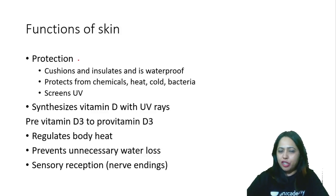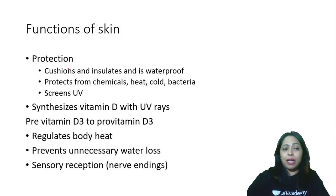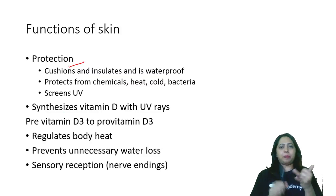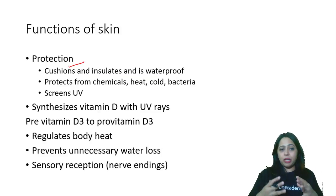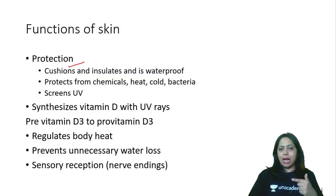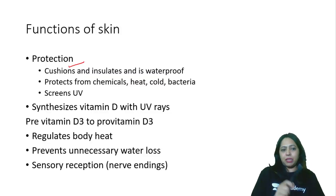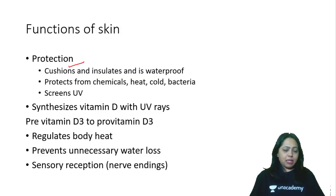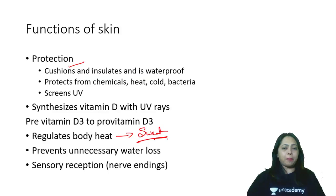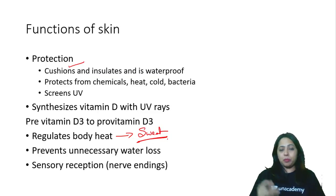What are the functions of the skin? It gives protection to the structures within. It acts like a cushion, insulates, and is waterproof. It protects you from waste, heat, and bacteria trying to invade your body. There is also synthesis of vitamin D with the help of UV rays on the surface of the skin. Pre-vitamin D3 is converted into pro-vitamin D3 in the skin. There is also a mechanism where excess body heat is removed in the form of sweat through separate glands and sweat ducts. It also prevents excessive water loss from the skin.